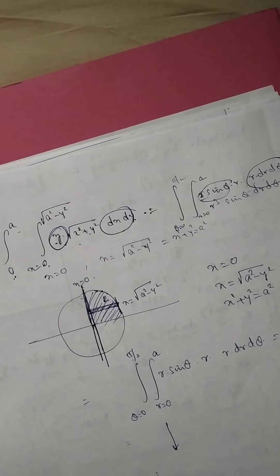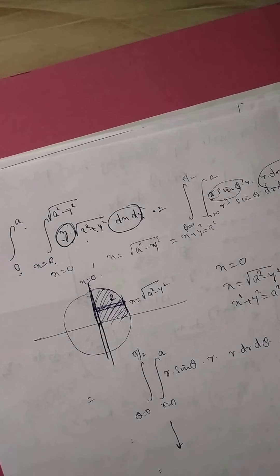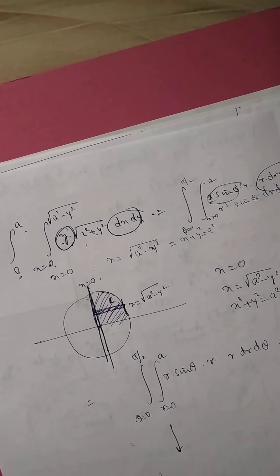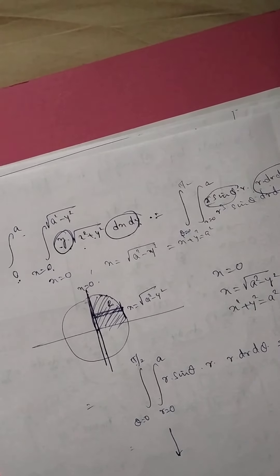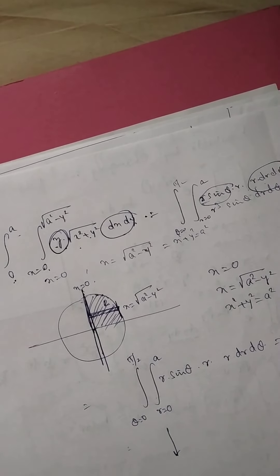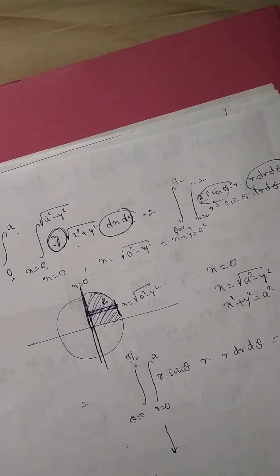That's all. This was just to give you an idea about how we evaluate double integration by changing the variables, especially from Cartesian to polar coordinates. I hope all of you revise this. If any difficulties, give me a text message. Thank you.